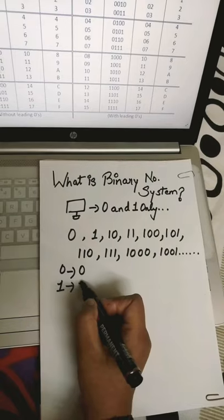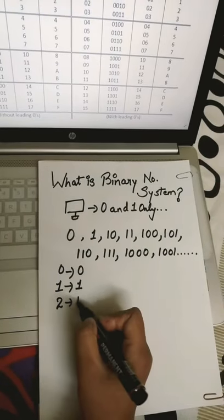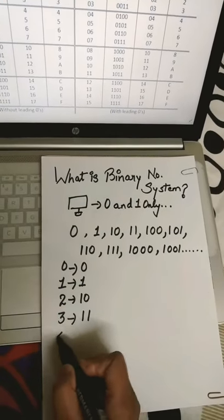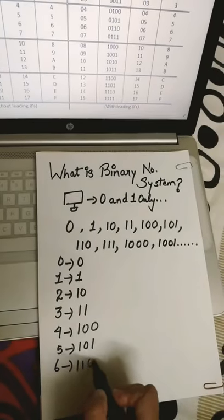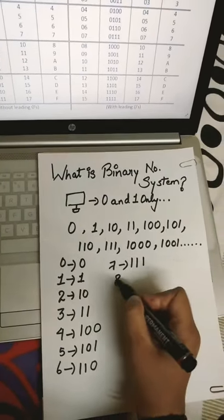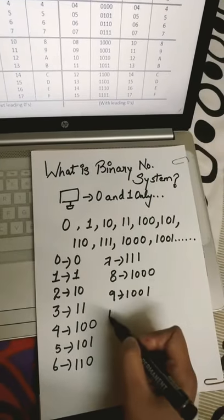If we write in the series, 0 will be 0, 1 will be 1, 10 will be 2, 11 will be 3, 100 will be 4, 101 will be 5, 110 will be 6, 111 will be 7 and so on.